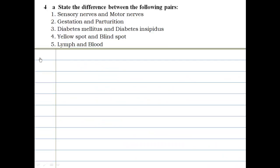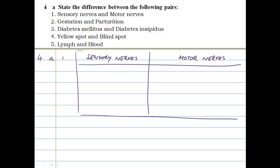That's question 4. Again, there's differences here for us. Difference between the following pairs: sensory nerves and motor nerves. So as we did the last time, sensory nerves there, motor nerves, column in between, and draw a neat little table with a ruler and a pencil.